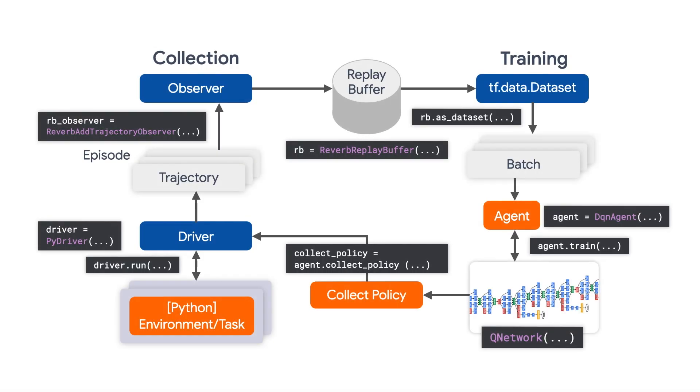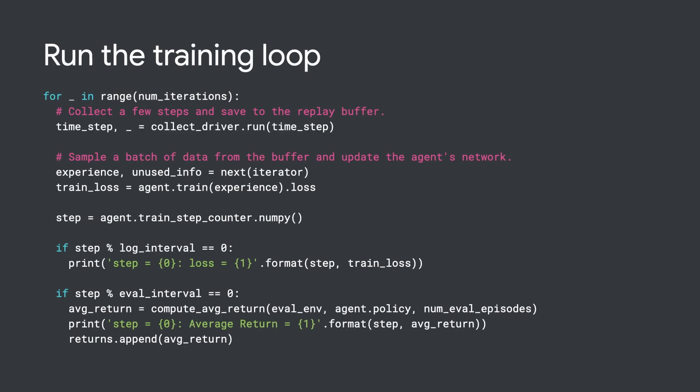It contains important information such as action, observation, and reward. Finally, we have all the pieces in place and can start training. We simply run a training loop. In the loop, we first use the driver to collect experiences, then sample some trajectories from the replay buffer, and lastly train the agent.